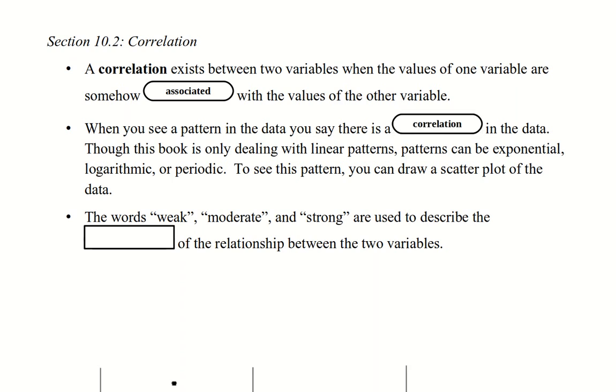Though this book is only dealing with linear patterns, patterns can be exponential, logarithmic, or periodic, like the vibration of a guitar string. To see this pattern, you draw a scatterplot of the data. The words weak, moderate, and strong are used to describe the strength of the relationship between two variables.